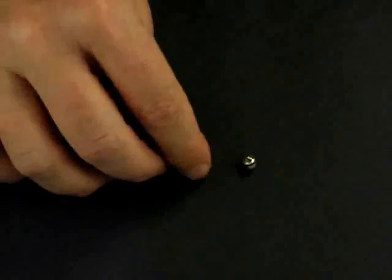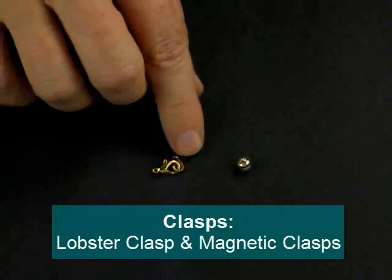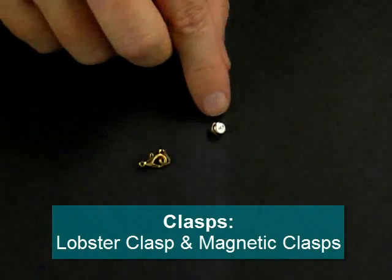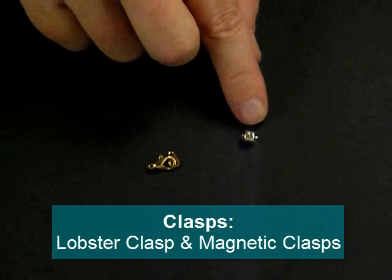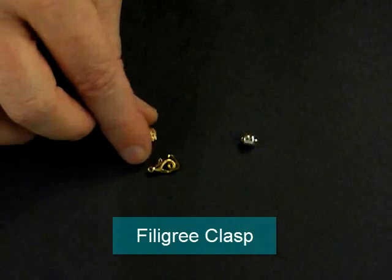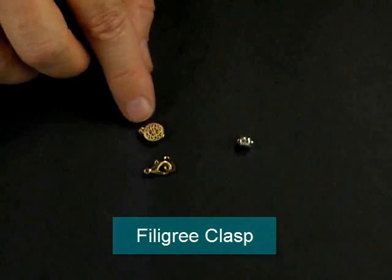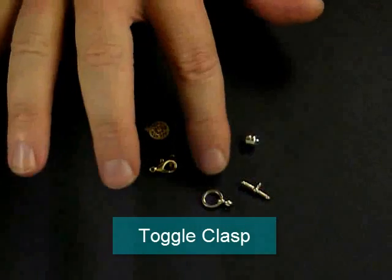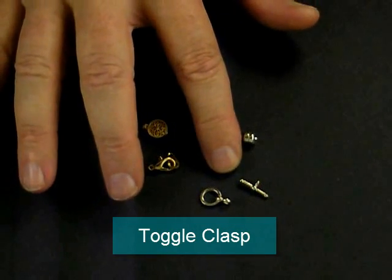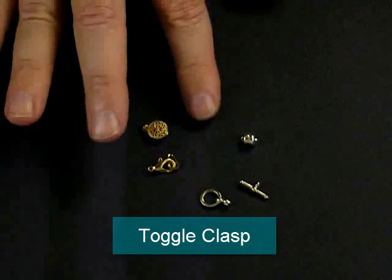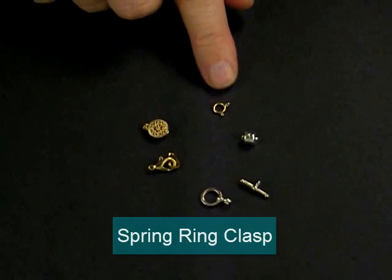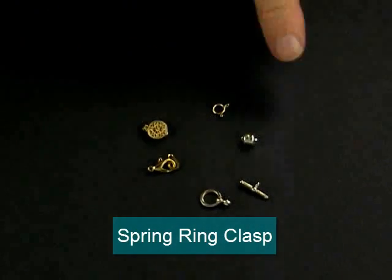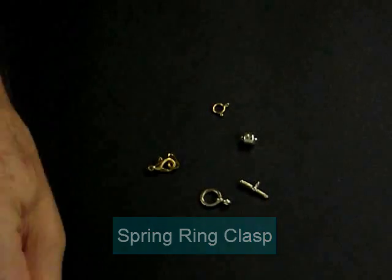The next thing we'll discuss is clasps. This particular clasp here is a lobster clasp. This is a specialty clasp that's two magnets that are connected together, and so it's a magnetic clasp. This is another specialty clasp. It's a filigree clasp, and it comes apart into two pieces. This is a clasp called a toggle clasp, and this is another clasp called a spring ring clasp. So those are several different types of clasps as jewelry findings.